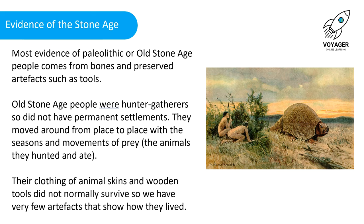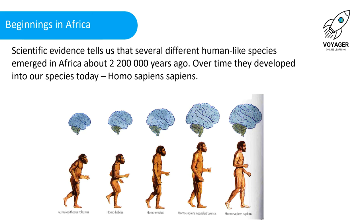Most evidence of Paleolithic or Old Stone Age people comes from bones and preserved artifacts such as tools. Old Stone Age people were hunter-gatherers and did not have permanent settlements. They moved around from place to place with the seasons and the movements of prey, the animals they hunted and ate. Their clothing of animal skins and wooden tools did not normally survive, so we have very few artifacts that show how they lived. Scientific evidence tells us that several different human-like species emerged in Africa about 2,200,000 years ago.